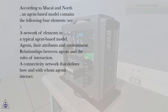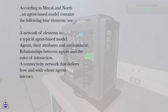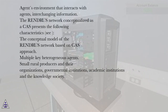According to Macal and North, an agent-based model contains the following four elements: a network of elements in a typical agent-based model; agents, their attributes and environment; relationships between agents and the roles of interaction; a connectivity network that defines how and with whom agents interact; and the agents' environment that interacts with agents, interchanging information.